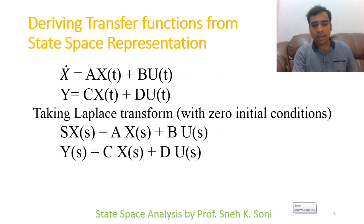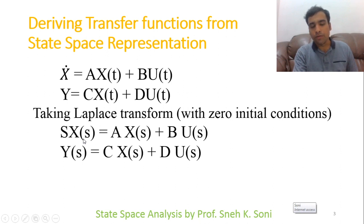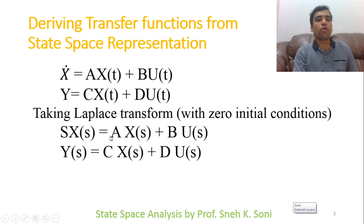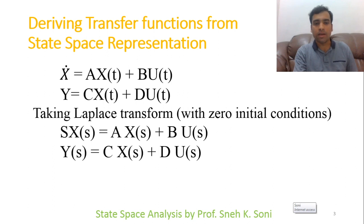Now I am taking X(s) from the state variable equation to the left side. Since A is a matrix, if you want to factor out X(s) as common, you need s to also be in matrix form. So I can write s multiplied by the identity matrix I, with the same dimension as matrix A. This gives us (sI − A)X(s) = BU(s).